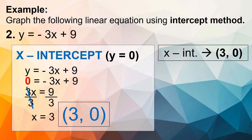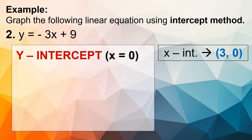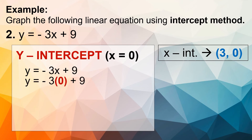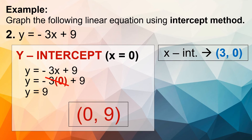Now let's proceed to the y-intercept, wherein x must be equal to 0. Using the same equation y equals negative 3x plus 9, substitute 0 for x: y equals negative 3 times 0 plus 9. Since negative 3 times 0 gives us 0, we cancel it out. So y equals 9. Our y-intercept coordinates will be 0 and positive 9.